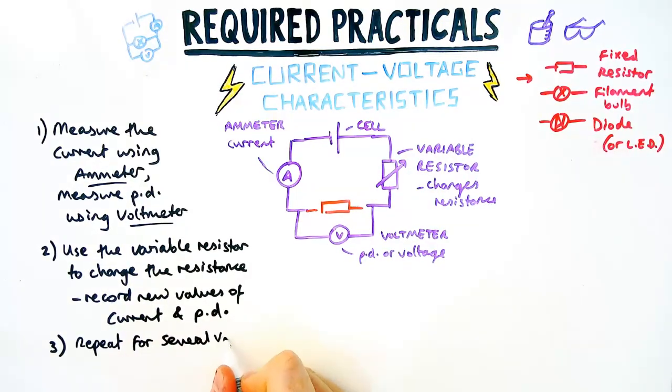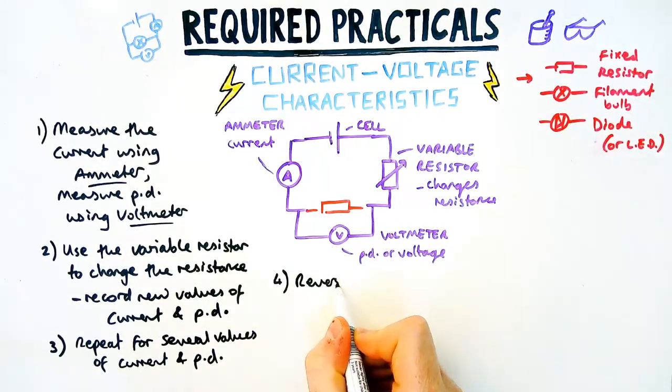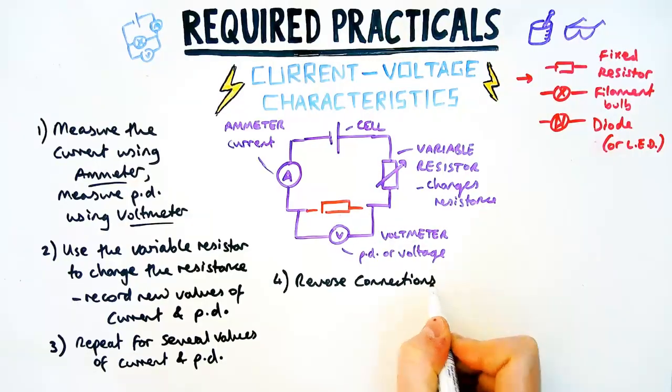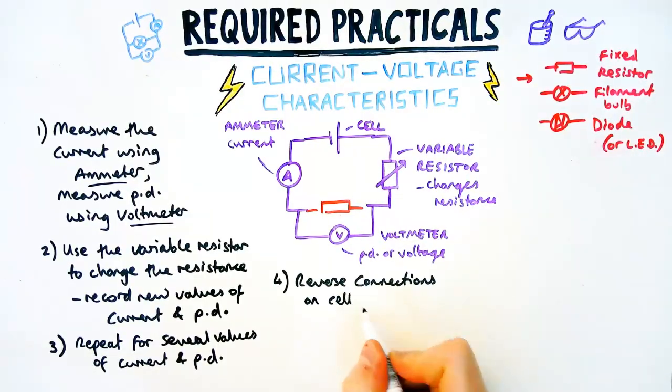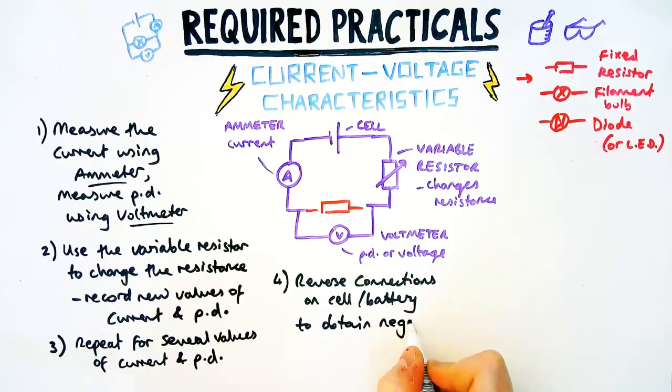The last step is the most important step, one that you want to make sure you don't miss out because you can't get full marks without it. We are then going to reverse the connections on the cell, so flip over the positive to negative, to obtain negative values for the current and PD.